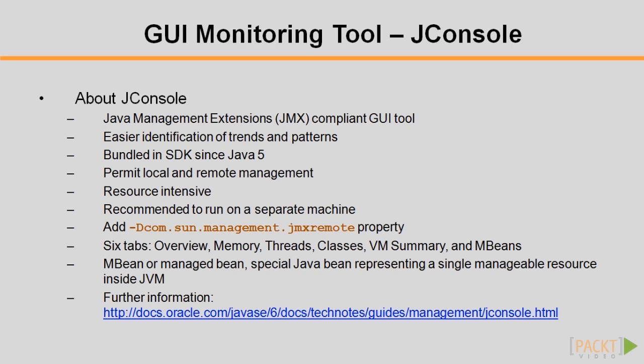Currently, JConsole groups a myriad of information into six tabs. The MBeans tab is the most important area for specific metrics and operations exposed by Cassandra's MBeans, which will be covered later in this video.